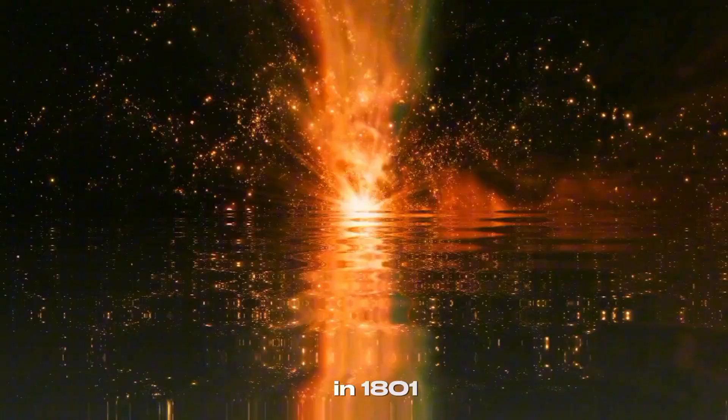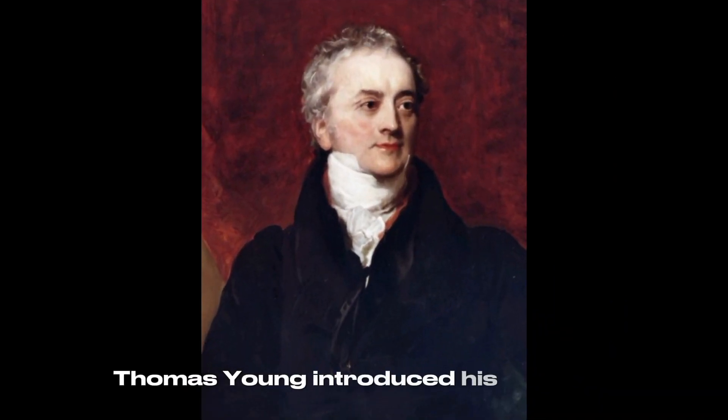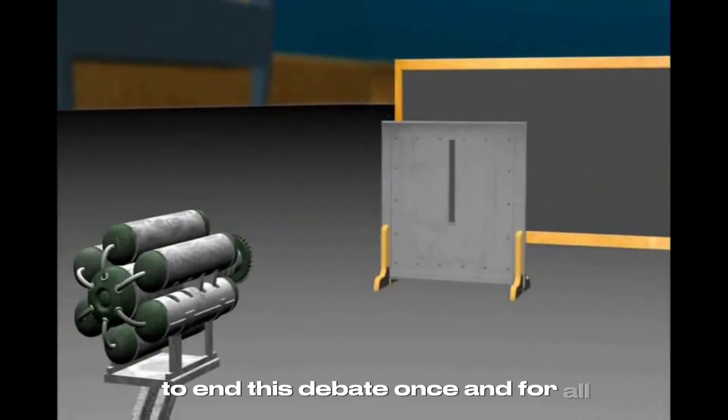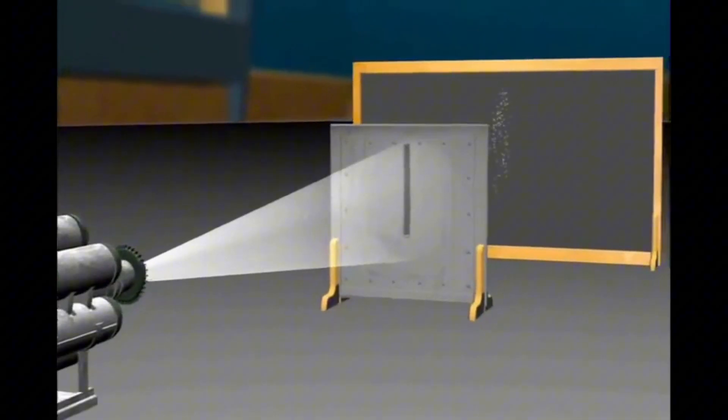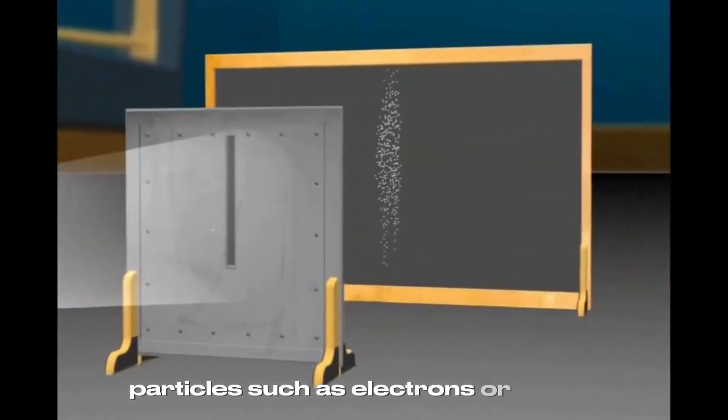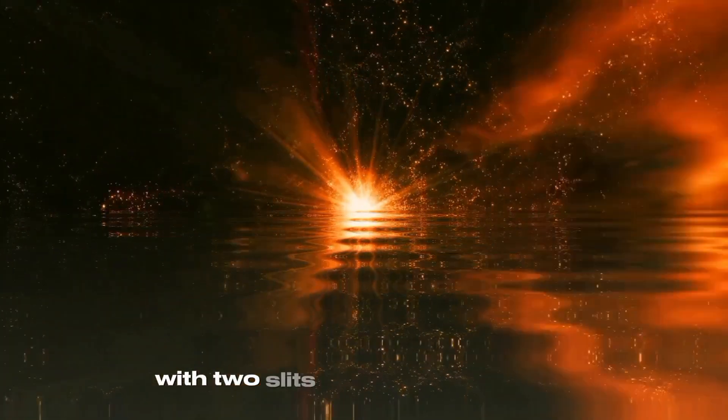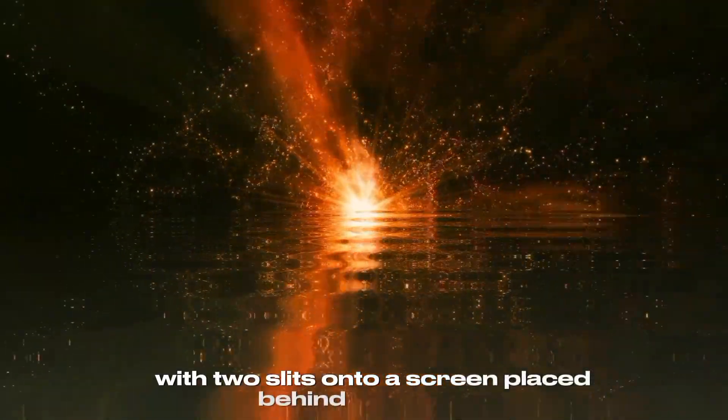In 1801, Thomas Young introduced his double-slit experiment to end this debate once and for all. In this experiment, particles such as electrons or photons are fired one by one towards a barrier with two slits onto a screen placed behind the barrier.